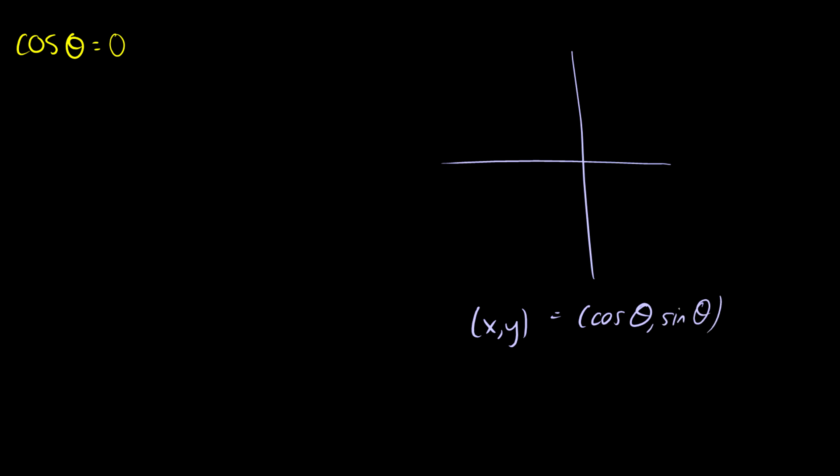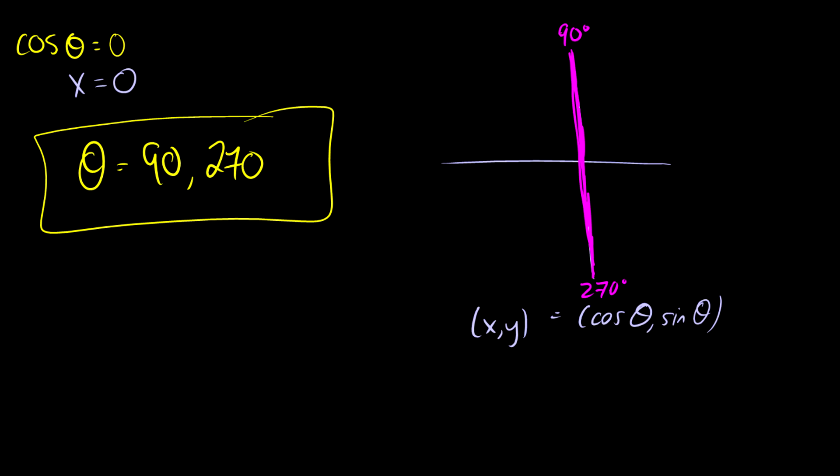So when is x equal to 0? That's what this question is asking. When is our x value equal to 0? So when is it on this line here? Well the angles on this line at 90 degrees and it's on this line at 270 degrees. Therefore our theta is going to be 90 and 270. So this one's not too bad. This is one of those ones that you could just memorize from a chart. But it's always good to visualize it.